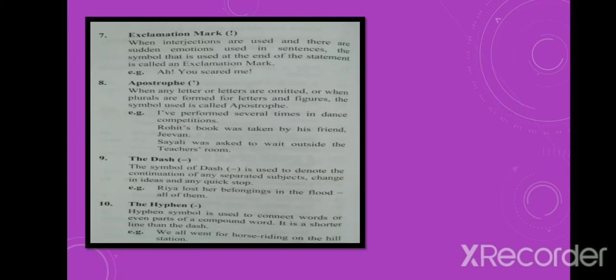Seventh, exclamation mark. When interjections are used and there are sudden emotions in sentences, the symbol used at the end of the statement is called an exclamation mark. For example: Ah! You scared me!